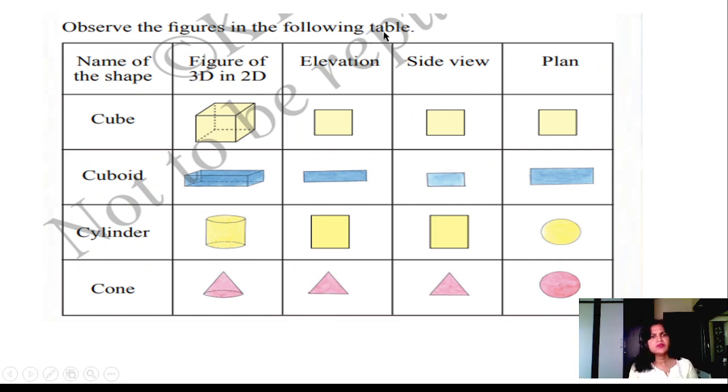Observe the figures in the following table. Name of the shape: Cube. Elevation: this. Side view, plan. Plan means top view. All are the same. Cuboid. It is elevation, that is front side. Side view, and top view.